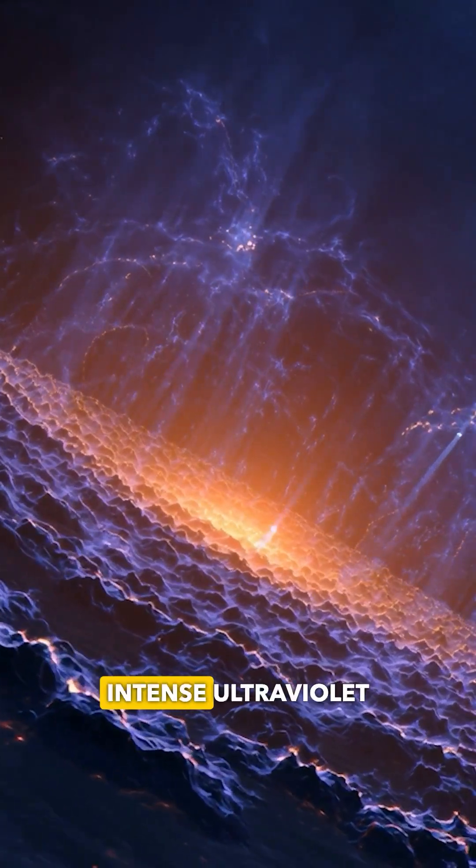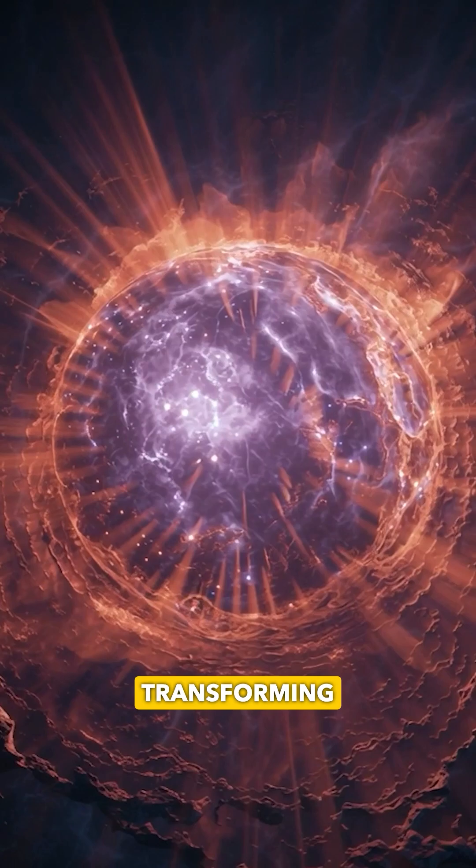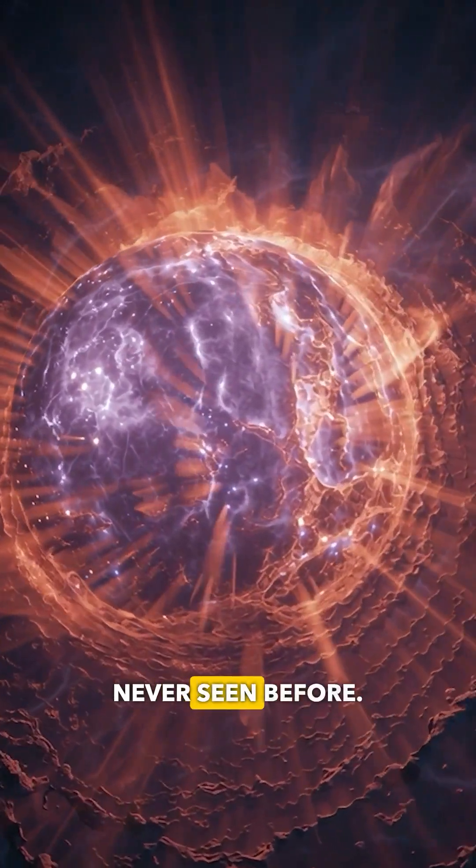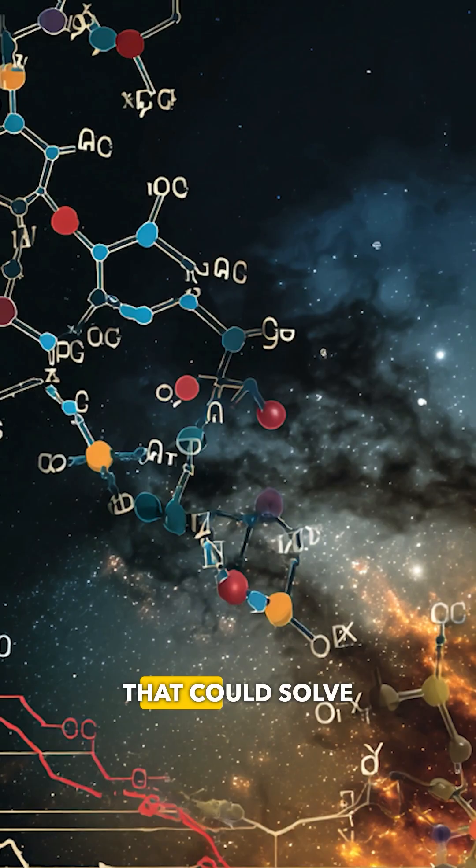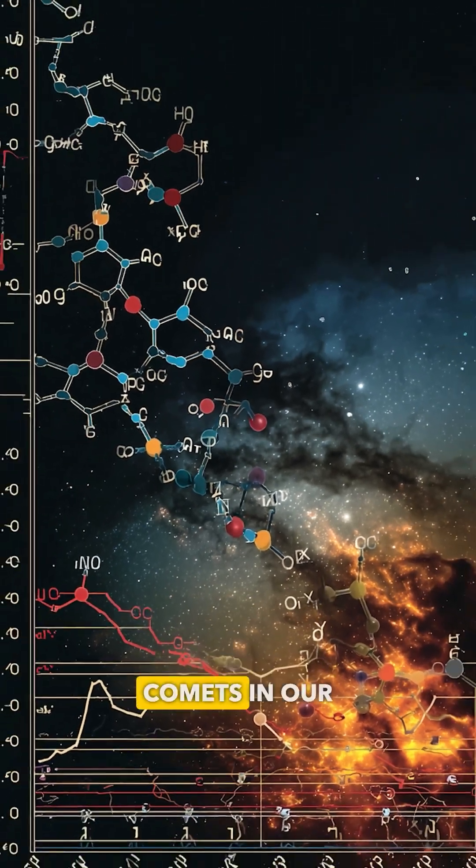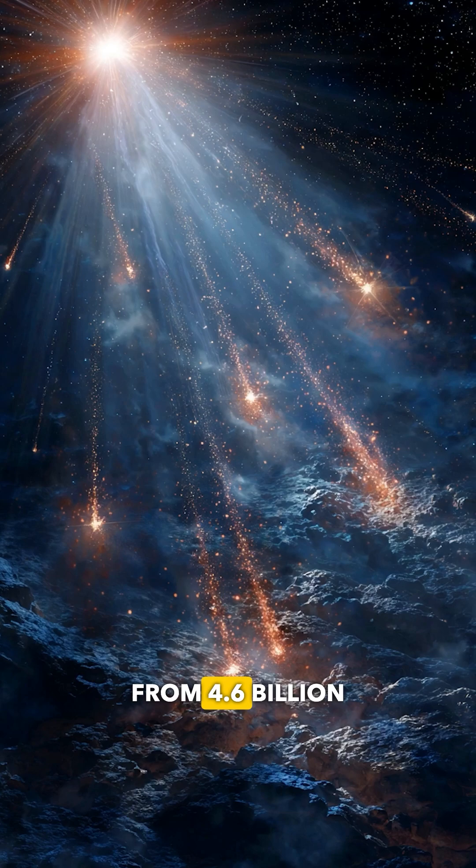The culprit? Intense ultraviolet radiation from massive nearby stars is literally cooking the disk, transforming its chemistry in ways we've never seen before. Webb even detected rare isotopic variants of CO2 that could solve mysteries about meteorites and comets in our own solar system, cosmic fingerprints from 4.6 billion years ago.